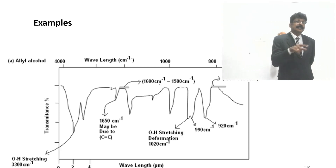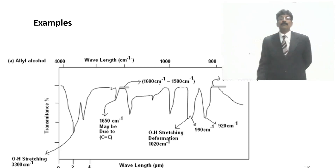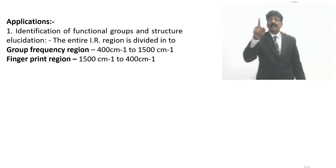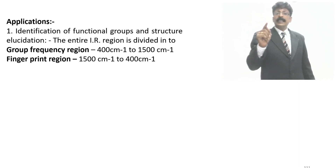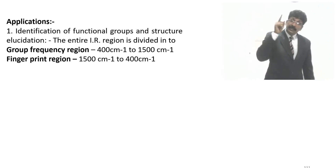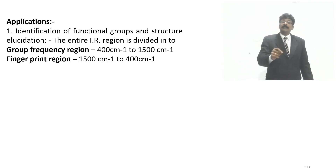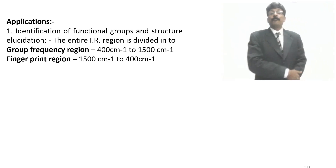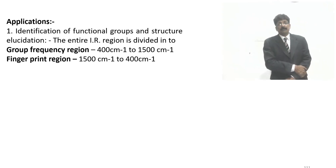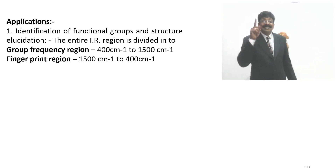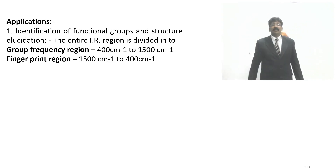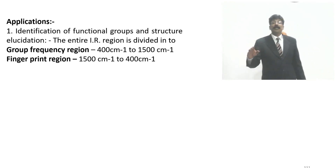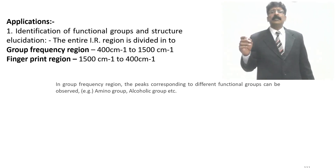Application of IR spectroscopy: identification of functional groups of any structure — this is the characterization step after isolation of the compound. The IR region is divided into the group frequency region (4000 to 1500 cm⁻¹), where peaks corresponding to different functional groups such as amino and alcohol groups are absorbed, and the fingerprint region (1500 to 400 cm⁻¹).